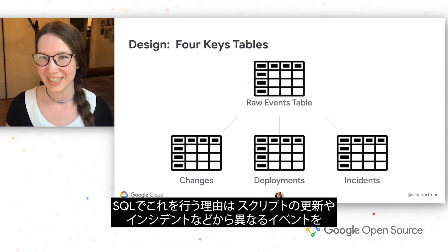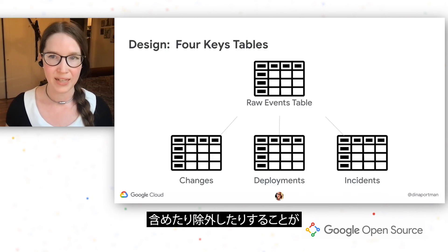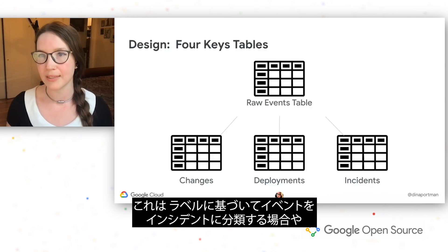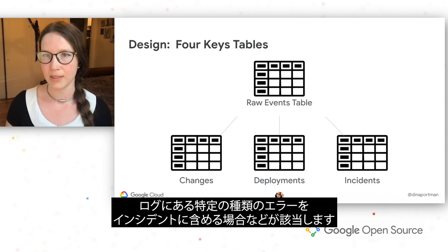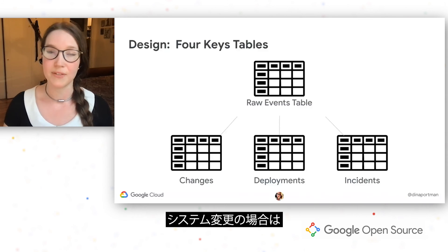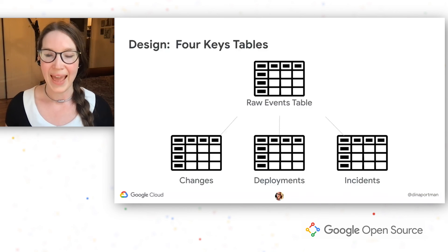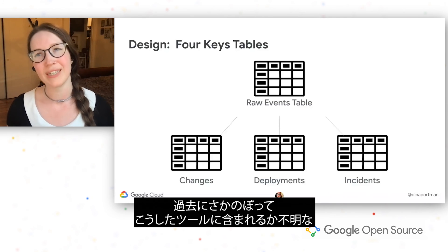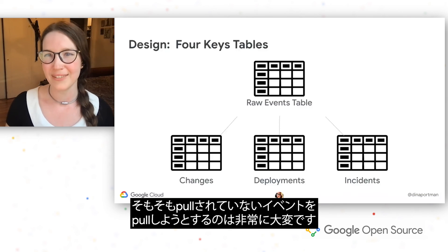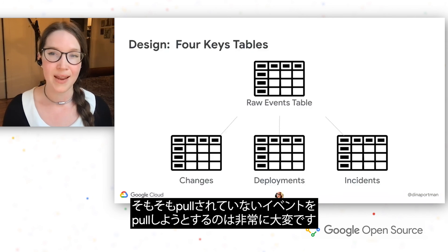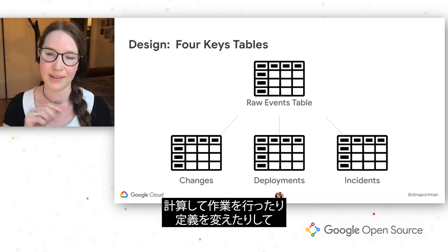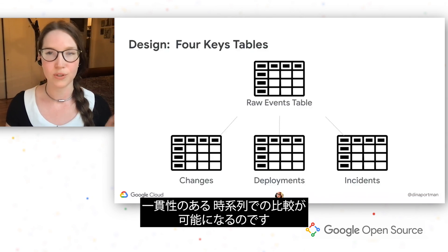The reason we're doing this in SQL is so it is very easy to update the scripts and include or exclude different events from, for instance, your incidents. If you are classifying some events as incidents based on a label or maybe a certain kind of error in your logs, then you would include it in incidents. But if you change systems, you might want to update that a little bit differently, and this is really easy to do when you are just changing your WHERE statement in SQL. It's very difficult to do if you're trying to go back in time and pull events that you didn't pull in to begin with. This is why we do everything downstream so that you can calculate and change the definitions to compare apples to apples over time consistently.